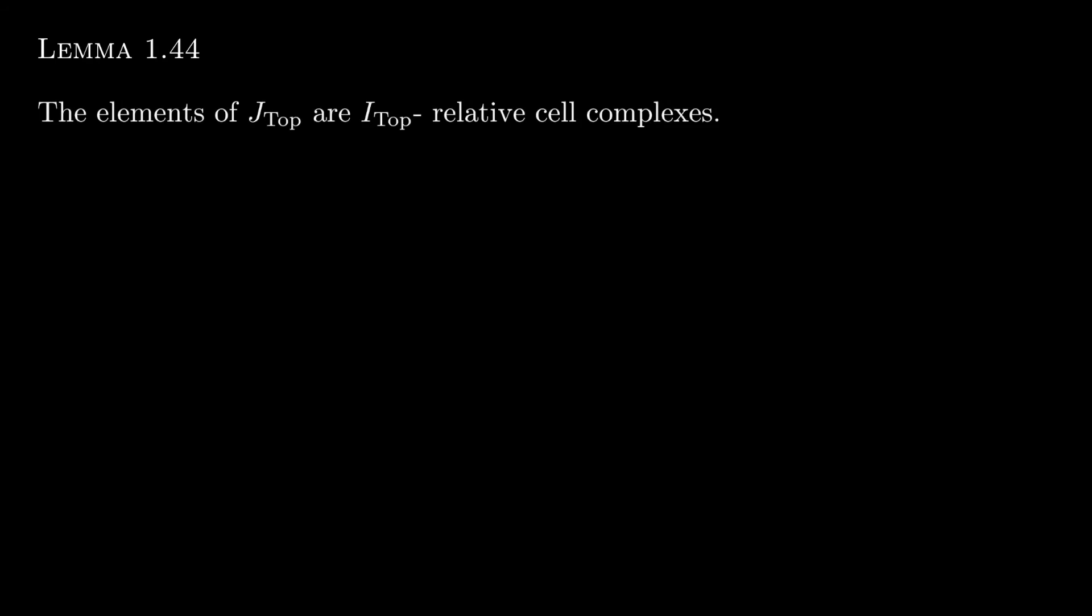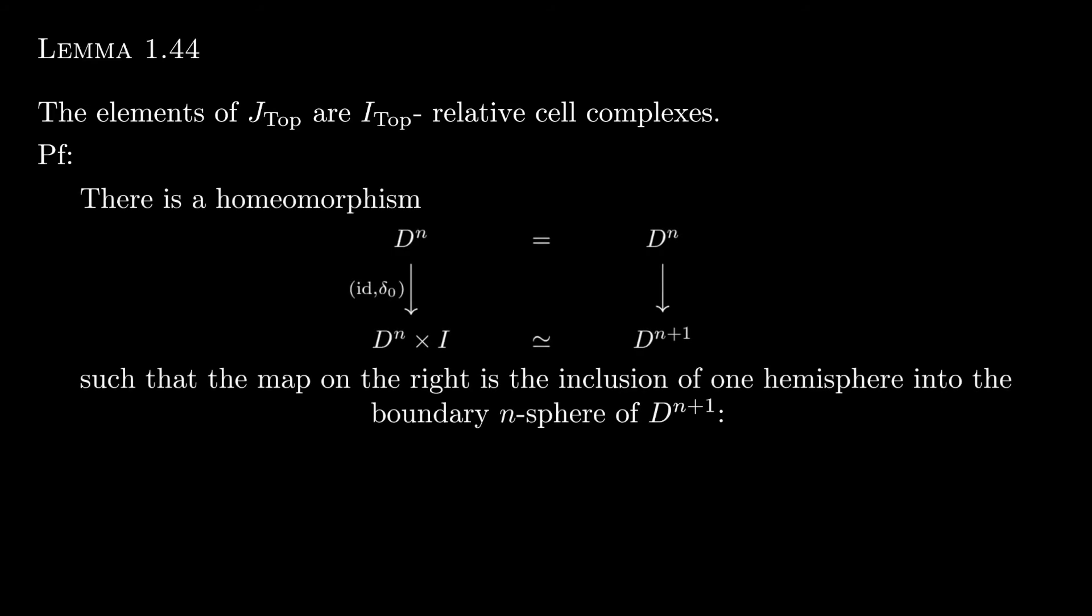Another simple observation we can make is that elements of J-top are in fact I-top relative cell complexes. Now this is a relatively simple proof, just looking at the diagrams and what I've written here, but I think going through it illustrates a good way to think about how we are going to construct proofs of this kind.